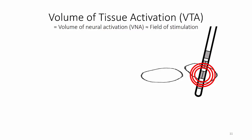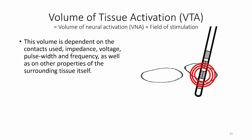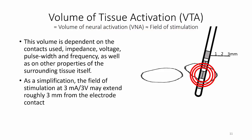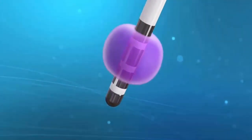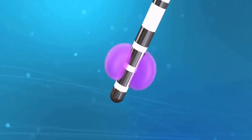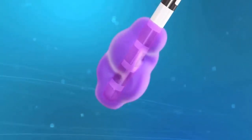When we talk about the field of stimulation, we are normally approximating this to be synonymous with the volume of tissue activation, or VTA, also known as the volume of neural activation. This is the area around the electrode where the electric current is directly modifying the activity of the neurons. This volume is dependent on the contacts used, impedance, voltage, pulse width, and frequency, as well as on other properties of the surrounding tissue itself. As a simplification, the field of stimulation at 3 milliamps may extend roughly 3 mm away from the electrode contact. Often it is helpful to imagine the VTA as a sphere of varying size around the contact, but in reality the shape is more complex, especially with directional electrodes.